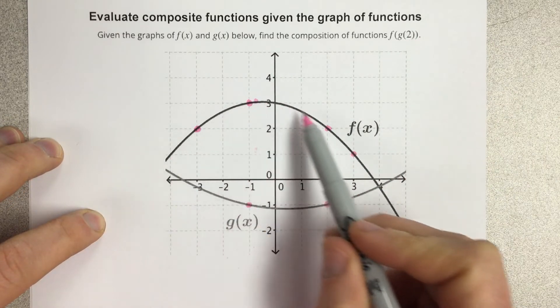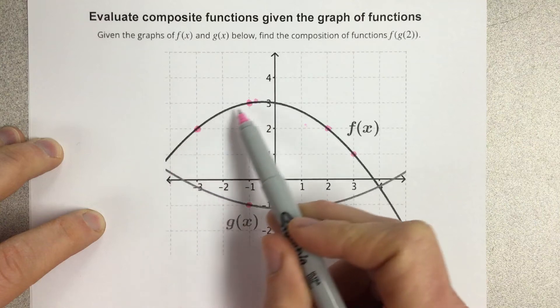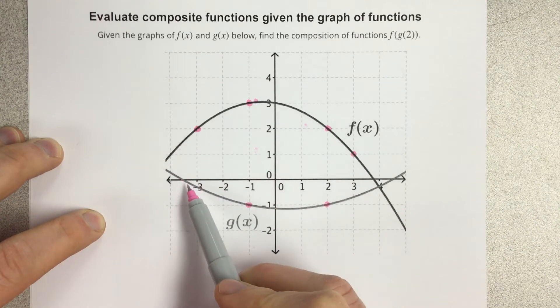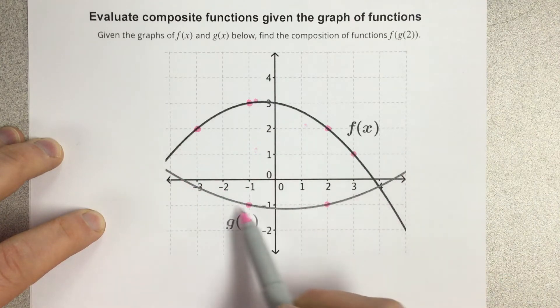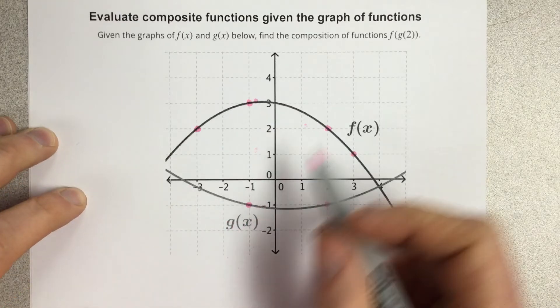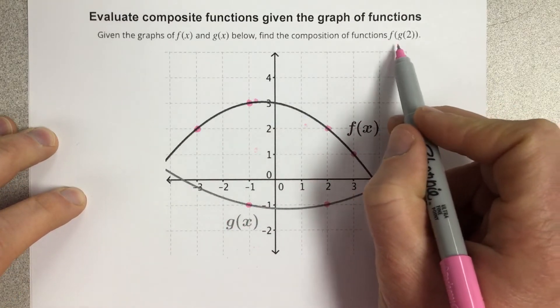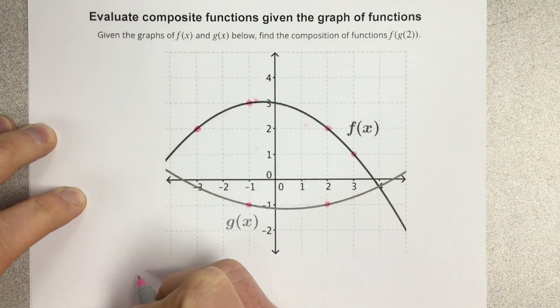So you can see we have f of x here, which looks like a downward-facing parabola, and then we have g of x, which looks like an upward-facing parabola. And we're going to try and evaluate f of g of 2. So let's start by writing f of g of 2 down below.